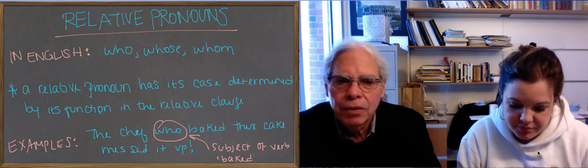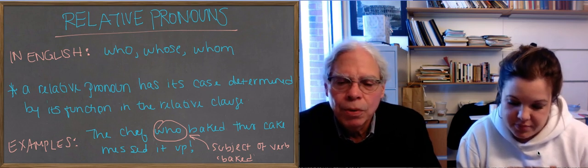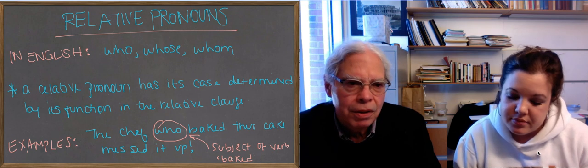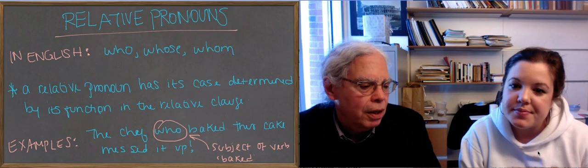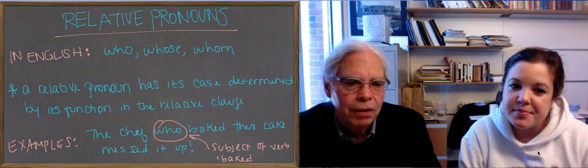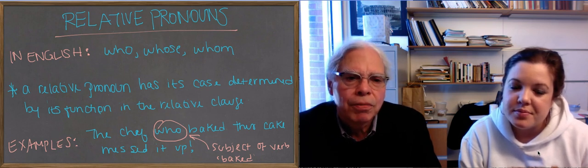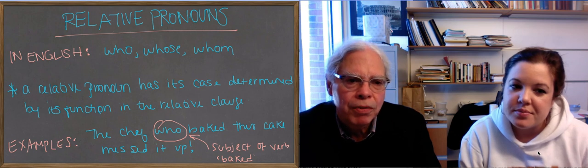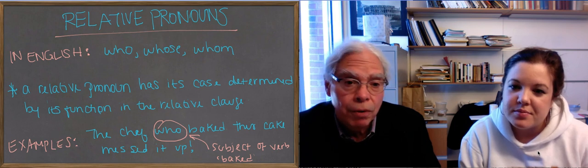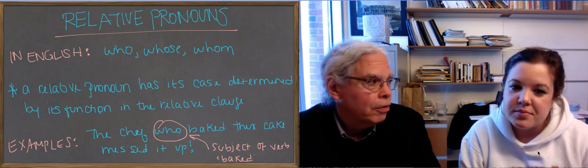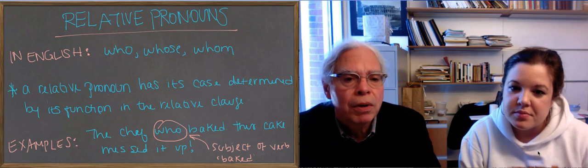And we're just going to look at the ones with who, whose, and whom, because they're very interesting from the point of view of understanding the way relative pronouns work in Greek and in English. So in English we have this relative pronoun who, whose, and whom, which has three different forms. And the way you use it is you choose which one of those three forms it has depending on its grammatical function within the relative clause.